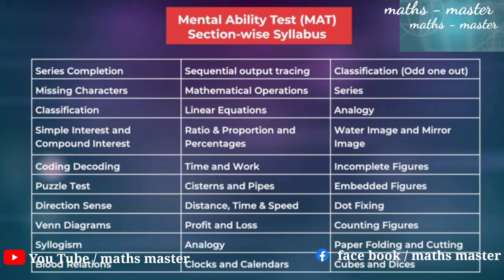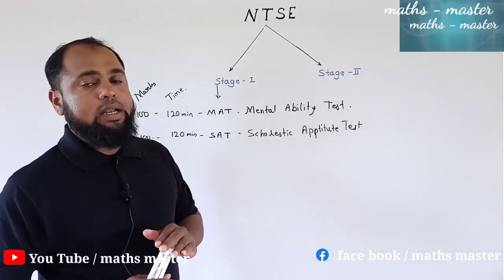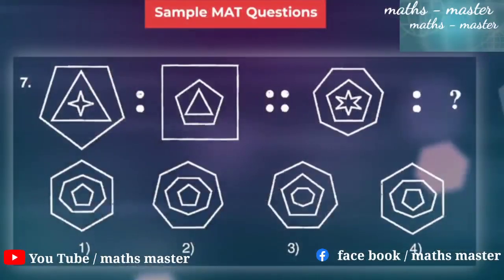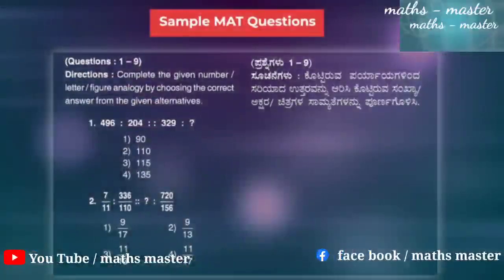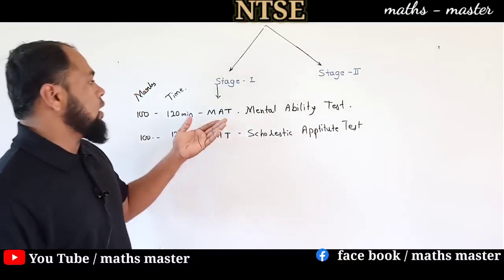Practice is very important to score well in MAT. Since it is an objective type examination, the answer options are very close to each other — if option A is correct, B and C may also look similar, creating confusion. So you need to do more and more practice to score good marks. The MAT questions cover logical thinking, number series, and mirror image problems.